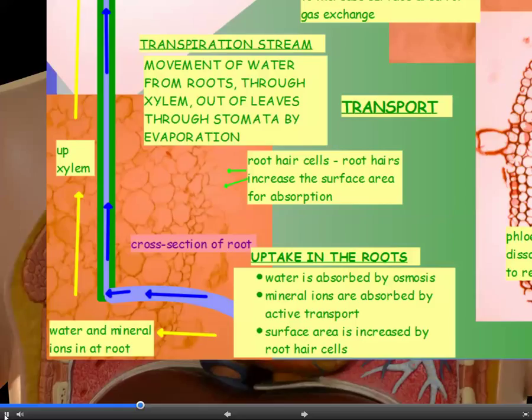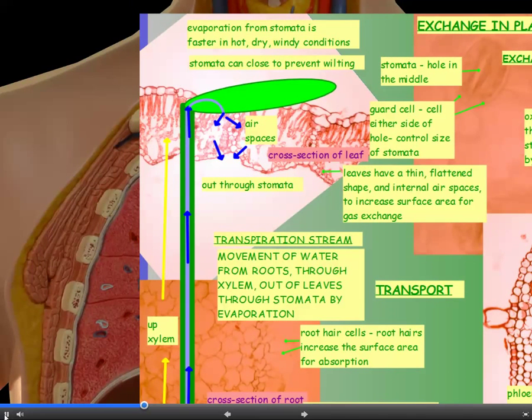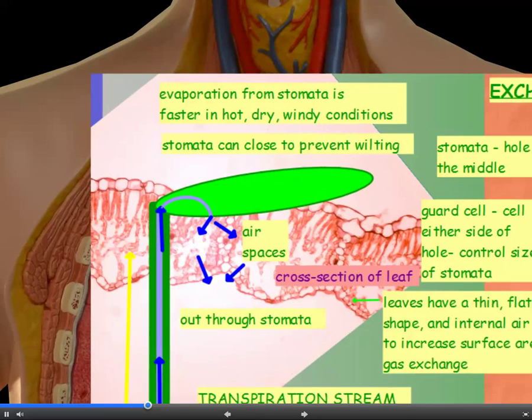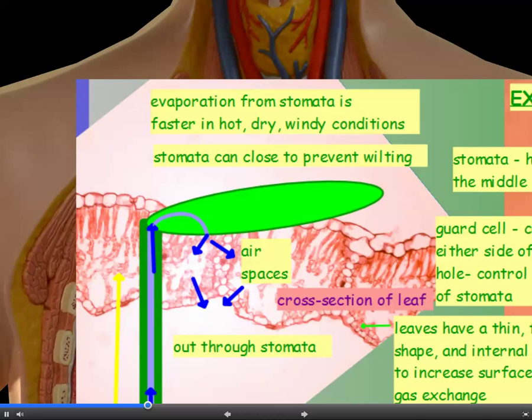So water and mineral ions are absorbed at the root in the root hair cells and then they move through the root into the xylem and they're pulled up the xylem. Now you can see here the water moving up the xylem. It's pulled up the xylem and into the leaves. Now once the water has moved into the leaves, it then moves into the air spaces and evaporates out through the stomata.